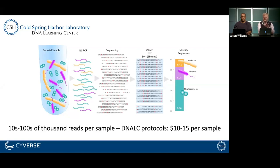QIIME2 will identify variability in the sequences in your sample, bin them — counting how many of each type of sequence there are — and allow you to look at fractions or relative amounts of species or other assigned taxonomic groups. You can do tens or hundreds of thousands of reads per sample. The cost we're aiming for is about $10 to $15 per sample; commercial cost is currently $50 to $75. We're working hard to make this more approachable.